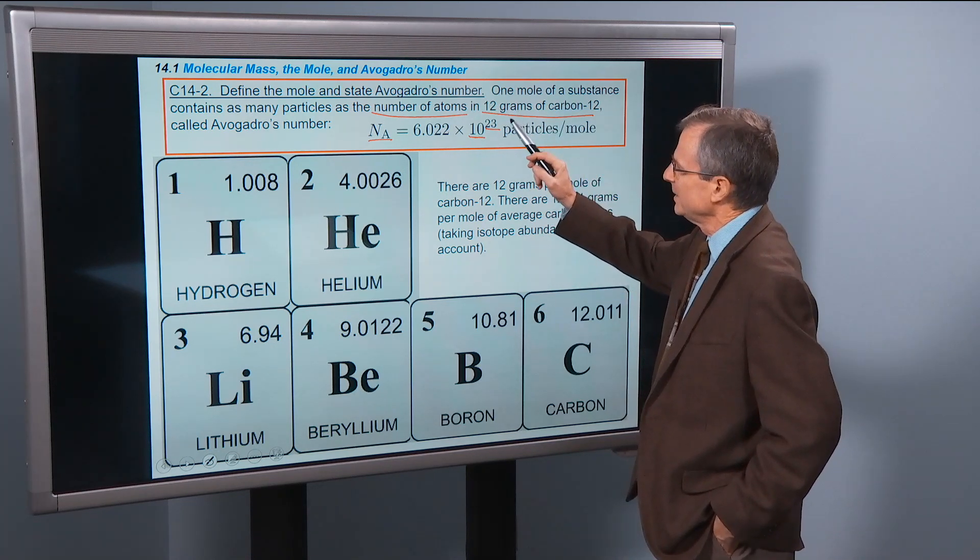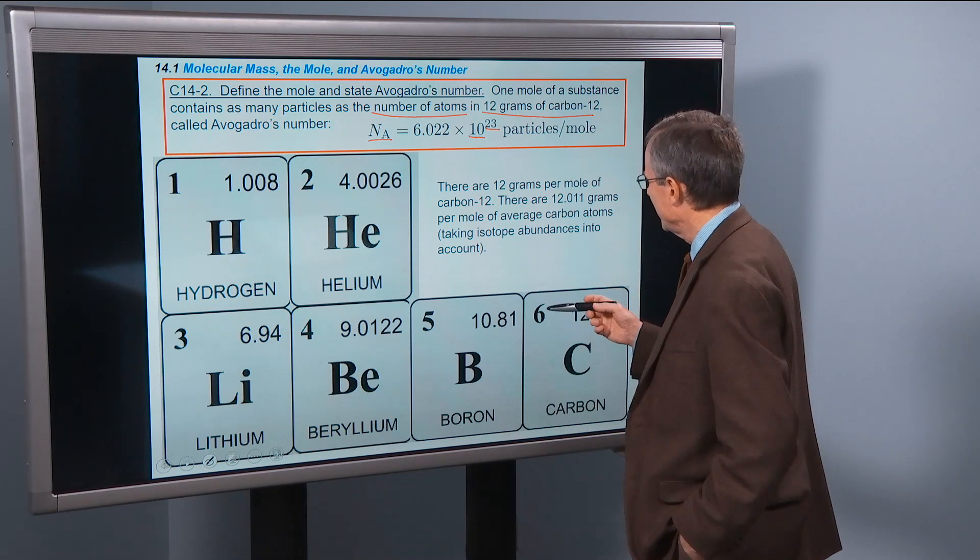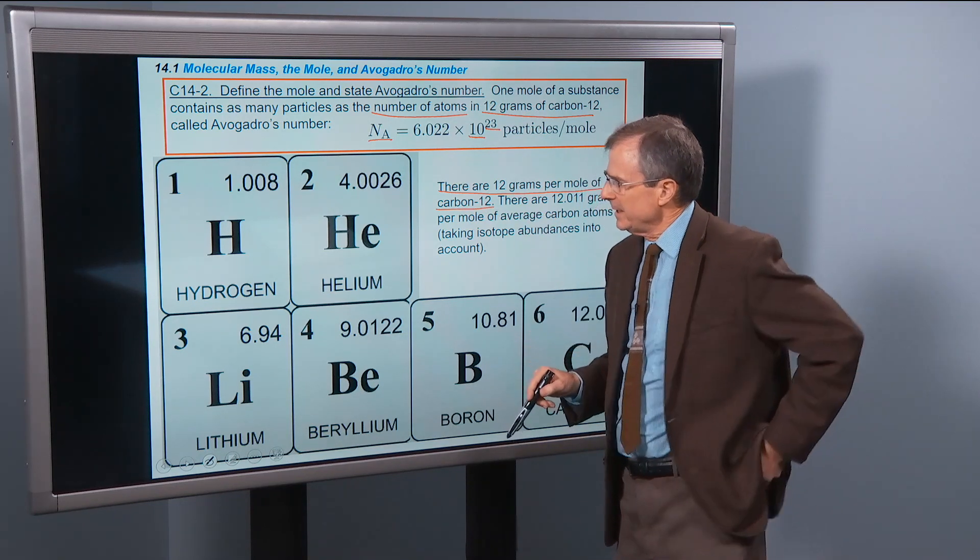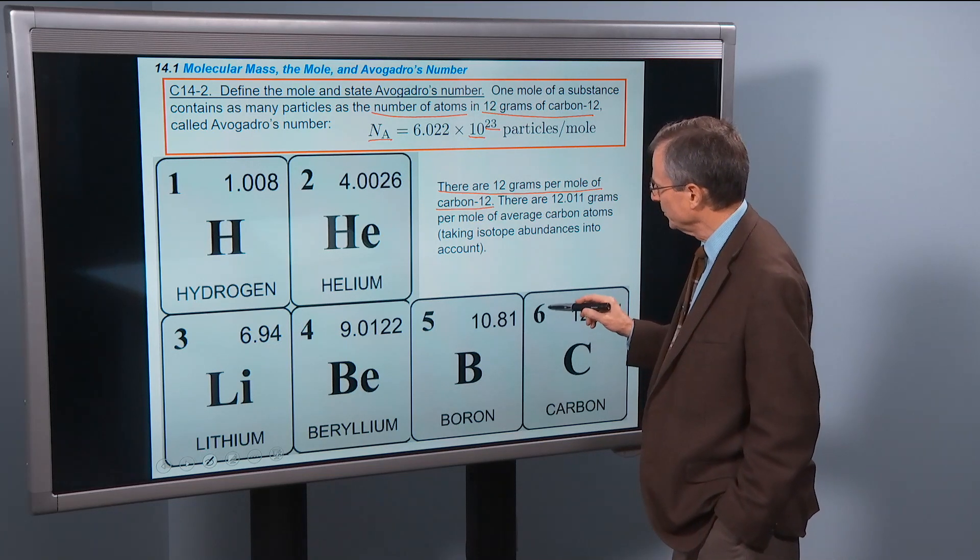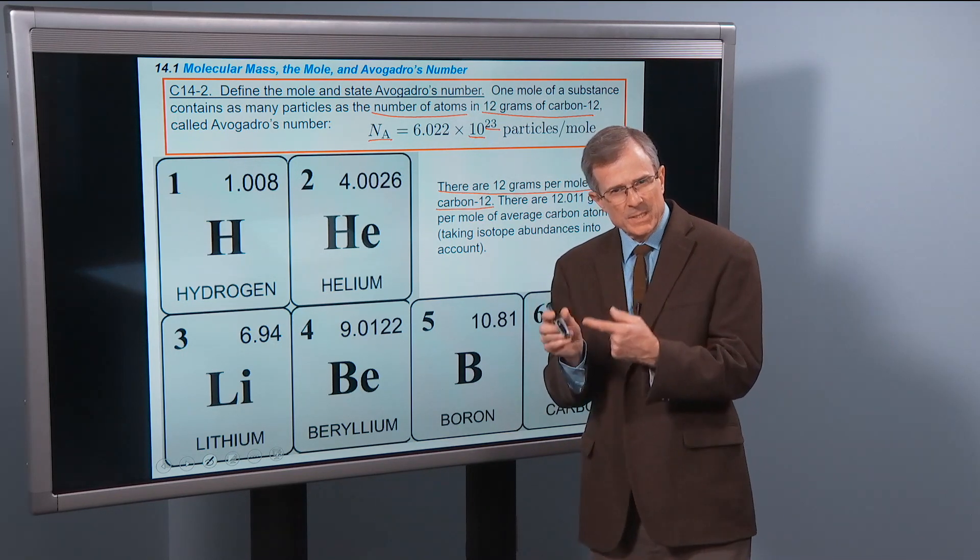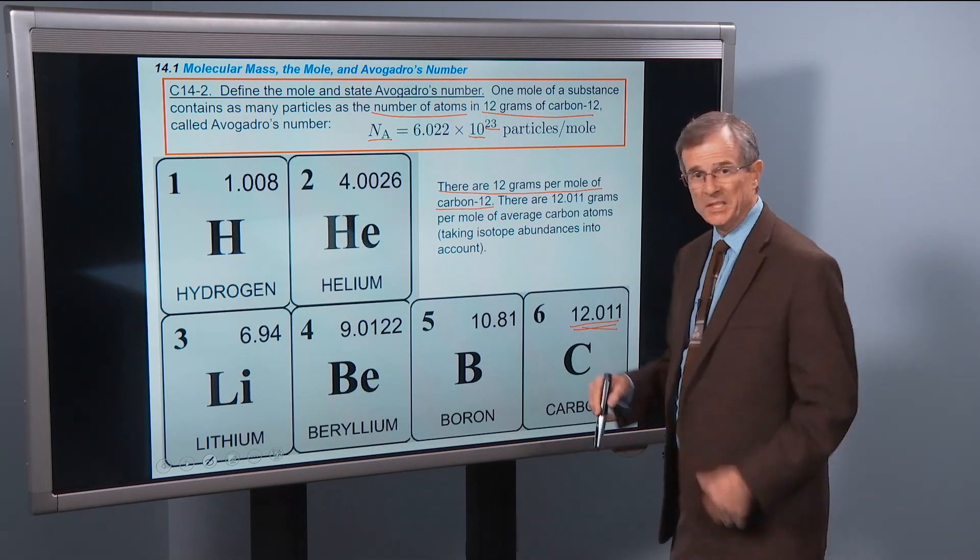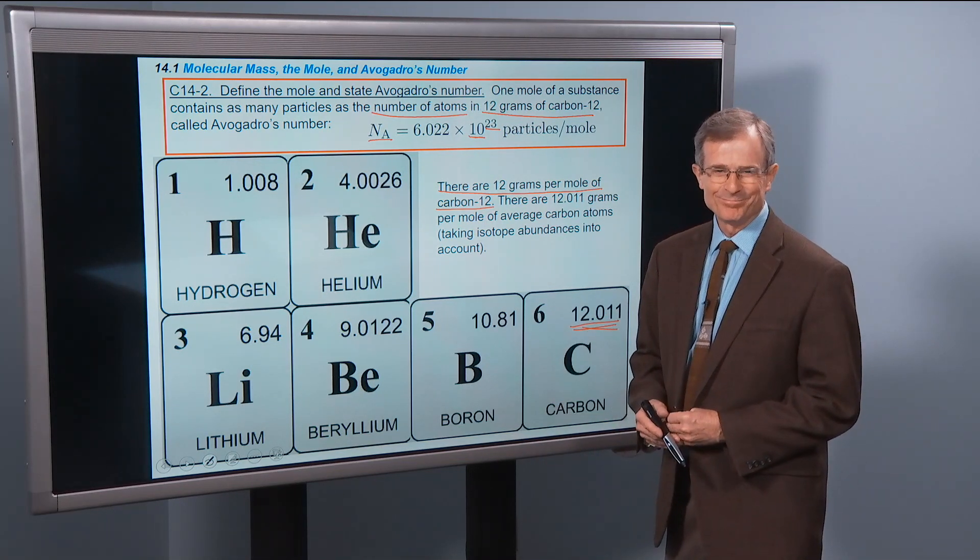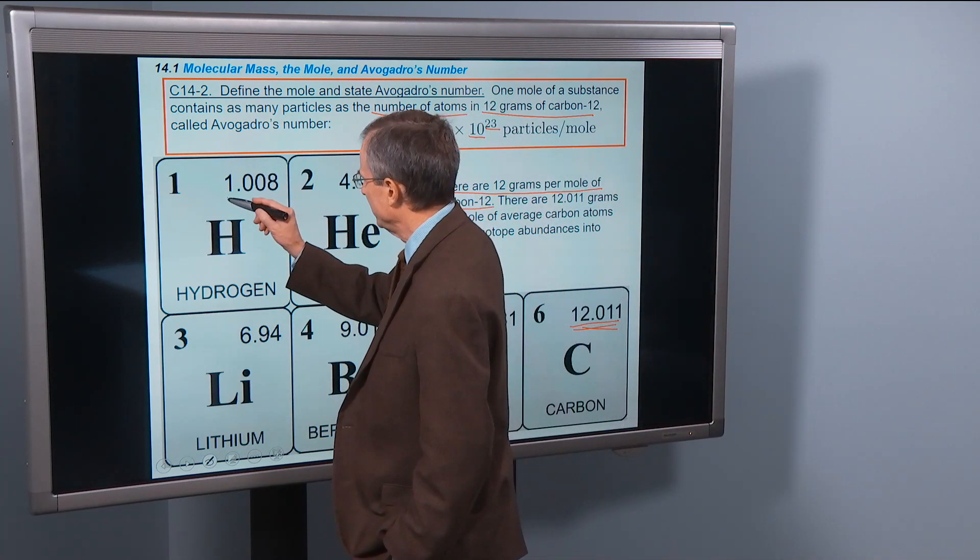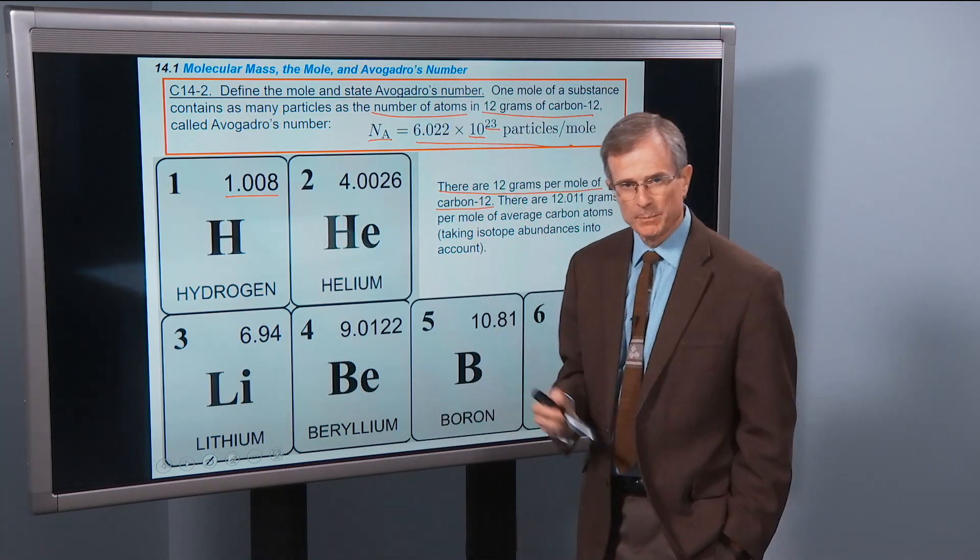Interestingly, since one mole is as many particles as are in 12 grams of carbon-12, that means there are 12 grams per mole of carbon-12. So these numbers mean the mass of a single atom, but this is also the number of grams needed for one mole. For hydrogen, if you have a mole of hydrogen, it's going to be 1.008 grams for that mole.